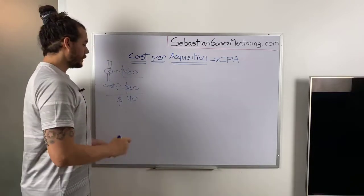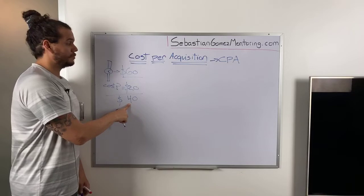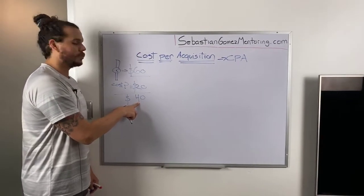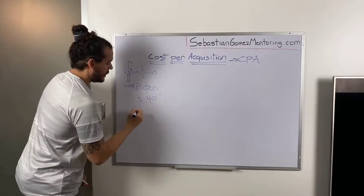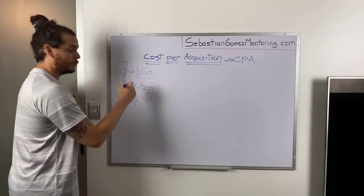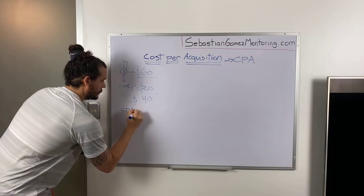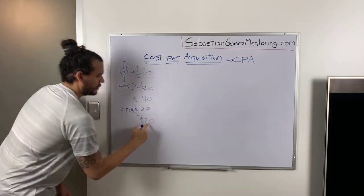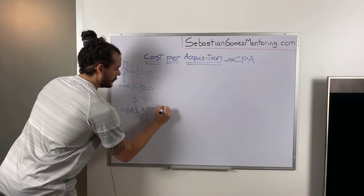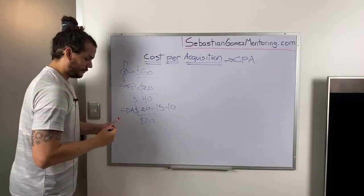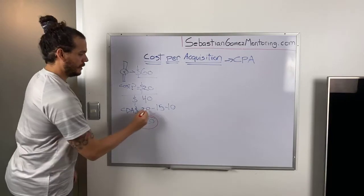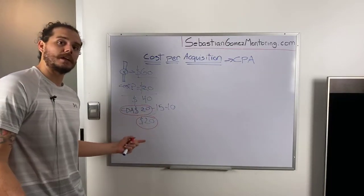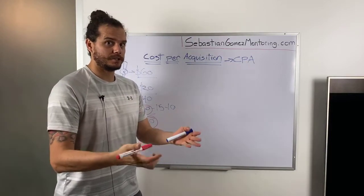That leaves you at forty dollars — that's your actual margin without the paid traffic. This number is the most important thing to understand, because now that you've excluded the cost of your product, you know how much money you have to play with. That's your whole margin. The most I'd be willing to pay to acquire a customer in this case — my CPA — would be, let's say, twenty dollars.